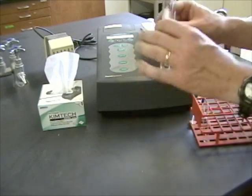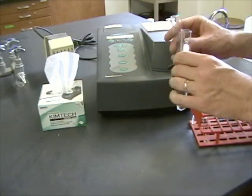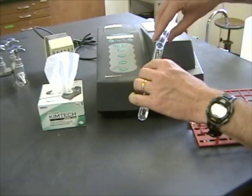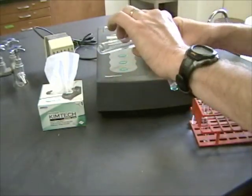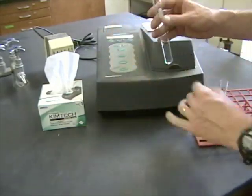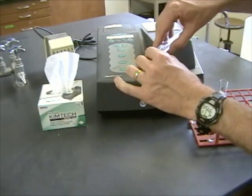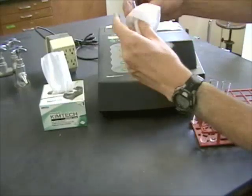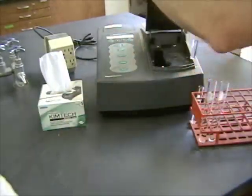As soon as I mix these together, somebody else in my group needs to start watching the clock because we're going to take readings every 20 seconds. I'm going to mix them together by just pouring them back and forth in these big tubes. Then I'm going to fill up my spectrophotometer tube about halfway, wipe it off to make sure there aren't any fingerprints on there, put it in and go.